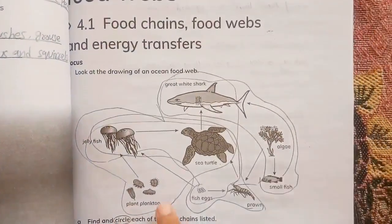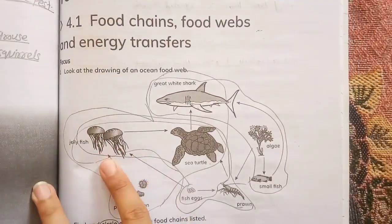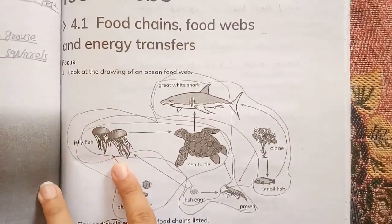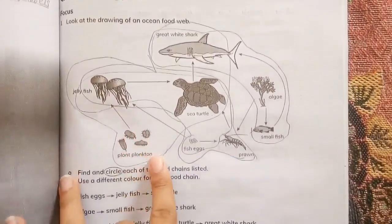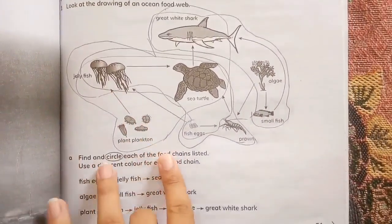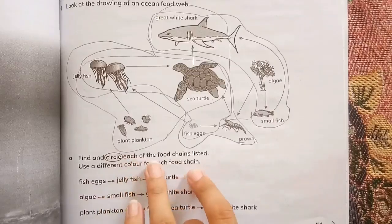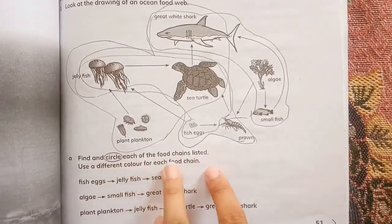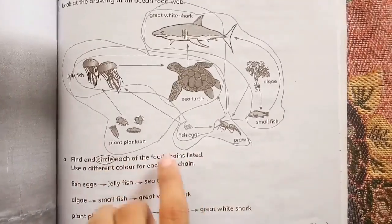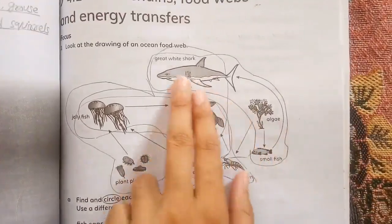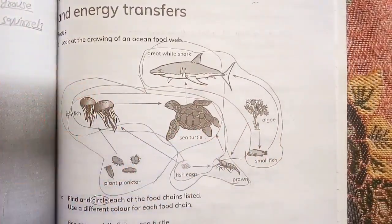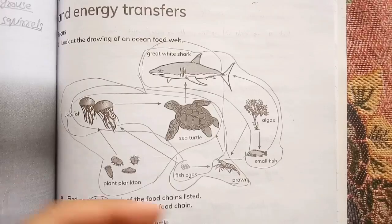On page 51 we have the focused question number one: look at the drawing of the ocean food web. Find and circle each of the food chains listed, using a different color for each food chain. You have to circle these food chains just like I did it.